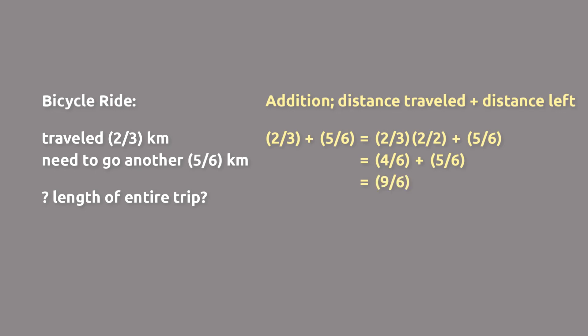Now we can simplify that. We know it's an improper fraction, and we're going to have to use a mixed number in order to simplify, but nine and six both share a common factor of three. So nine divided by three is three, six divided by three is two.